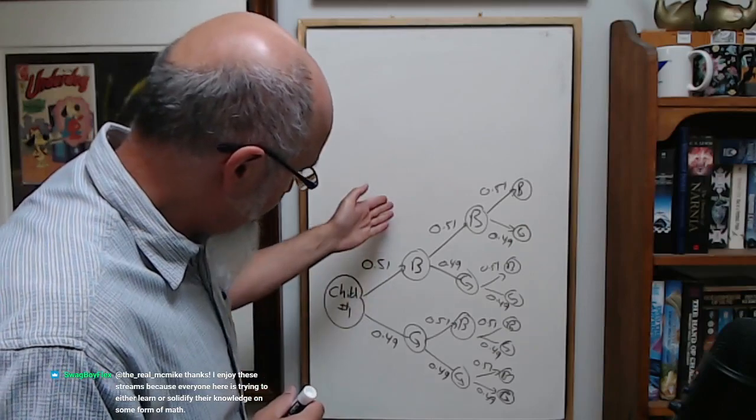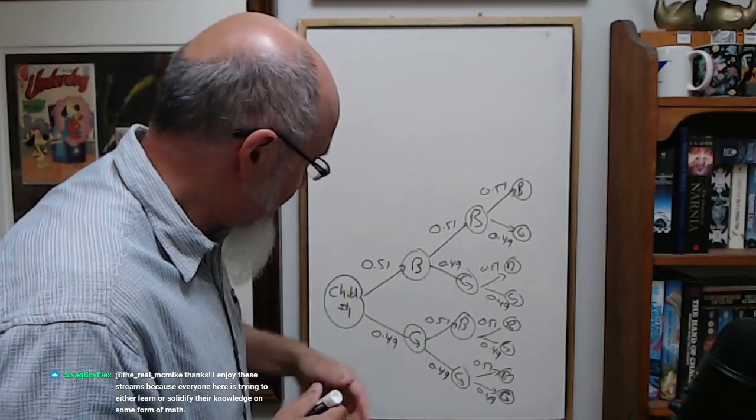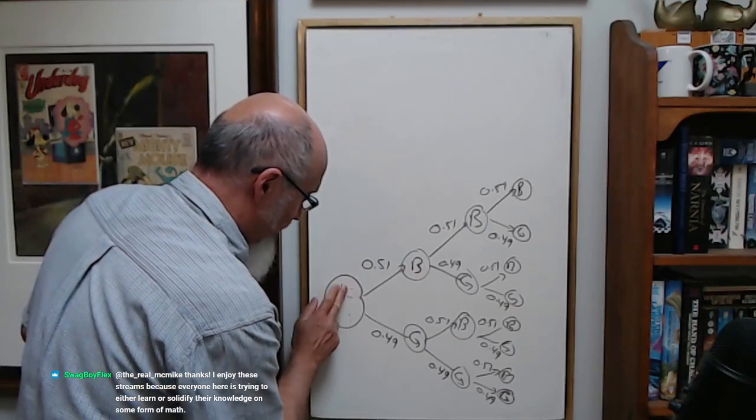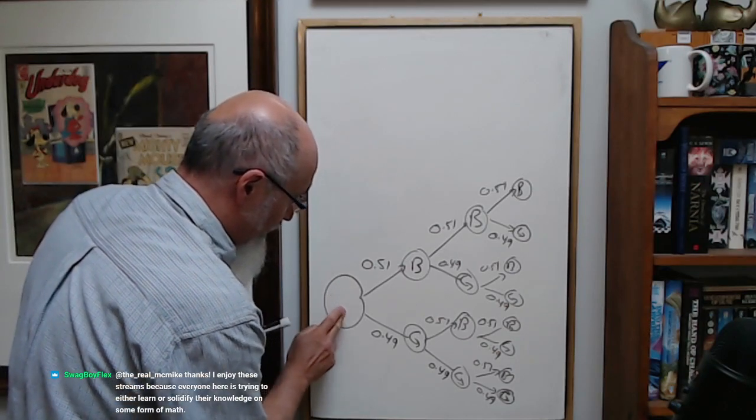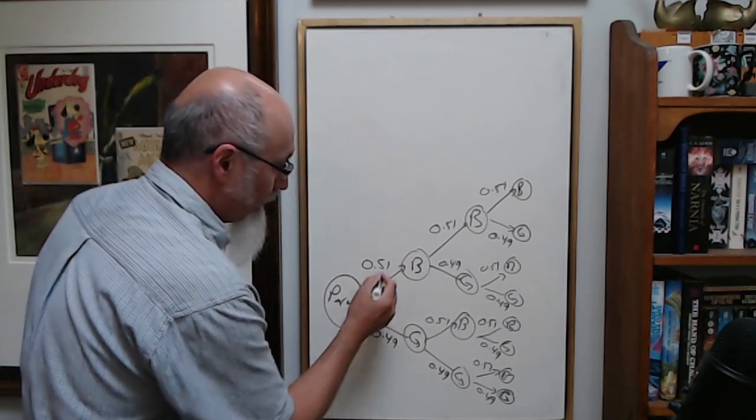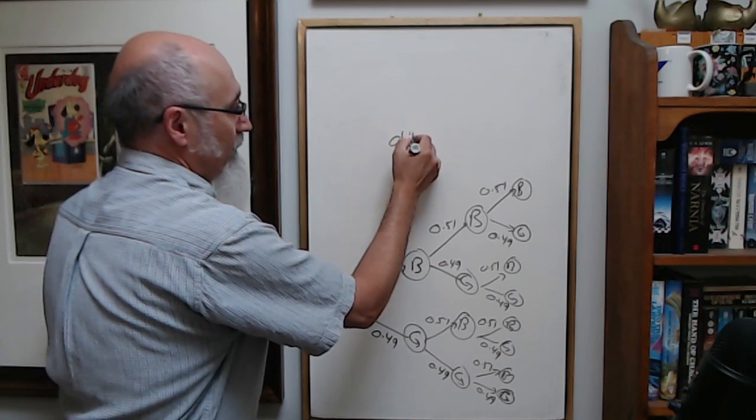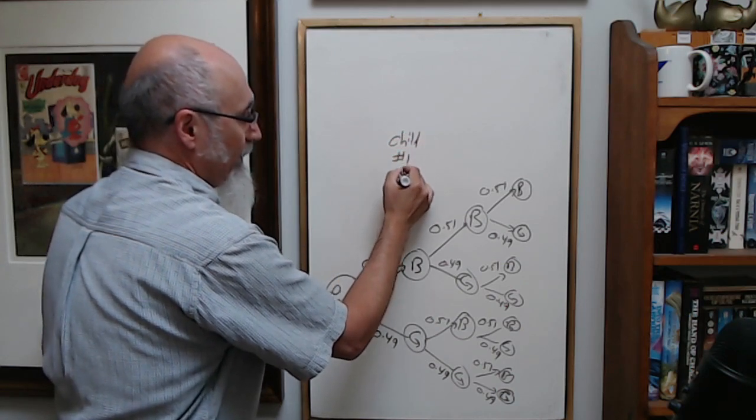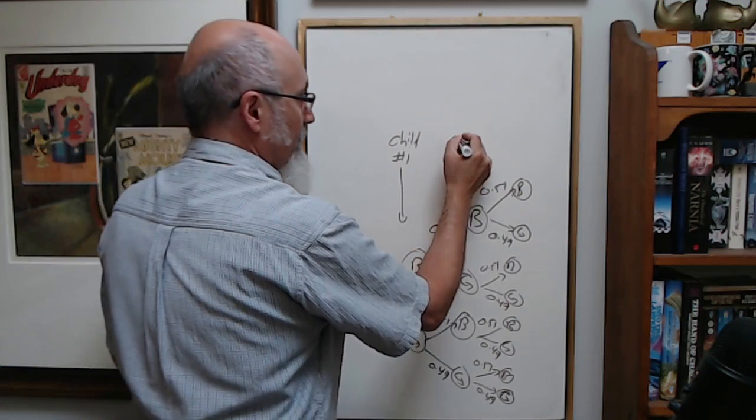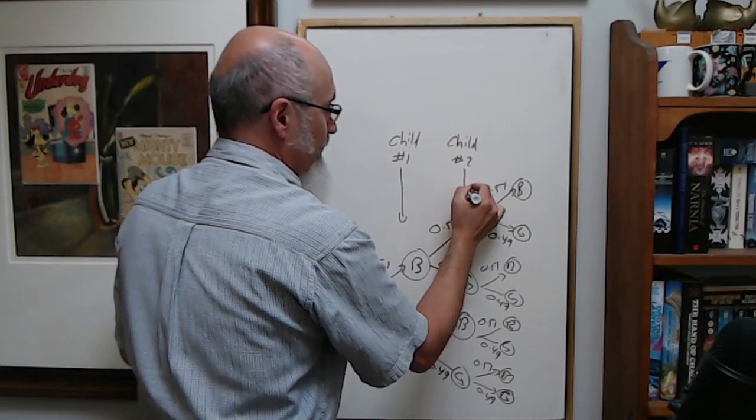So we got three children, one event. This is child number one, this is parents, right? So child number one is here, child number two is here...